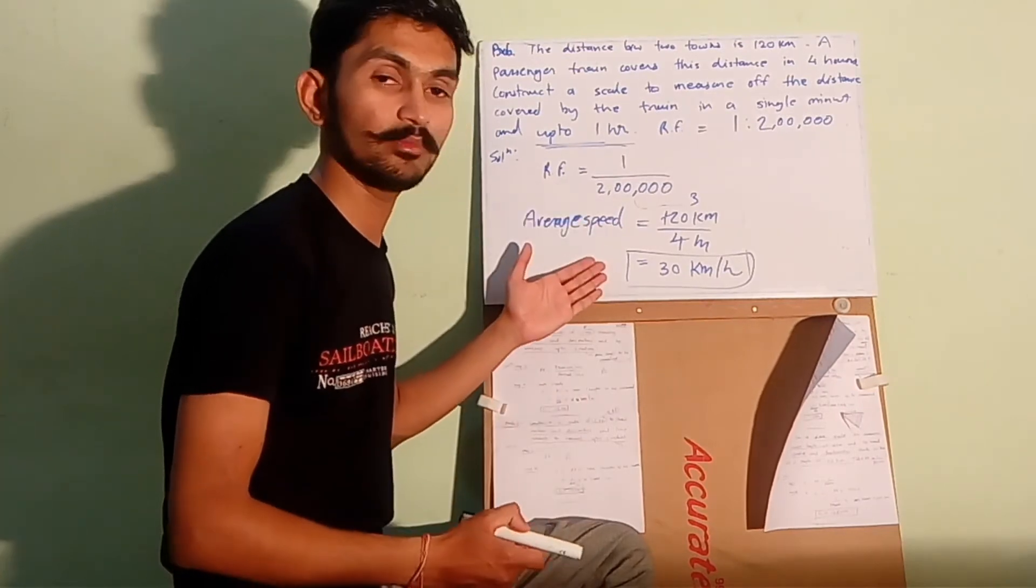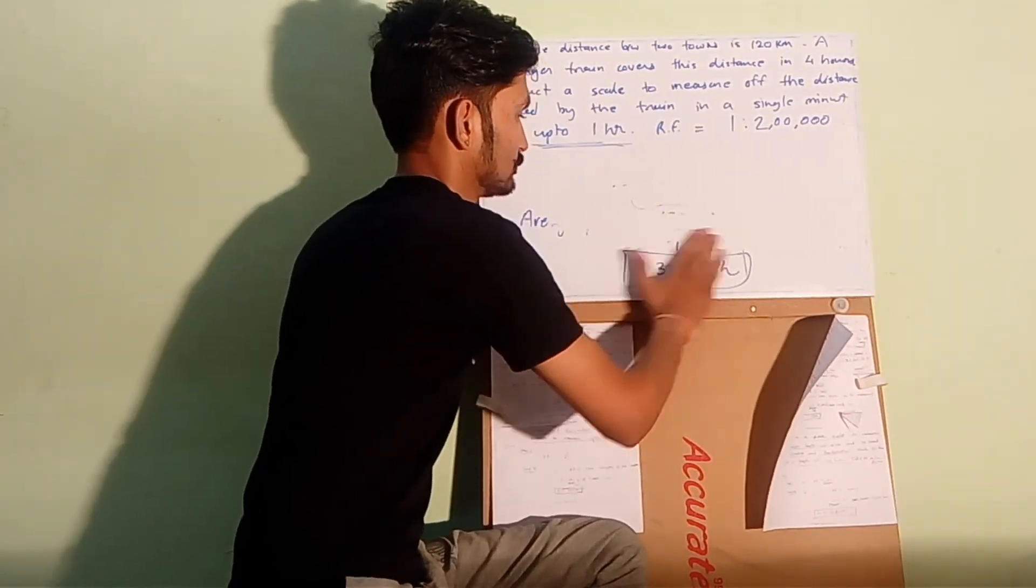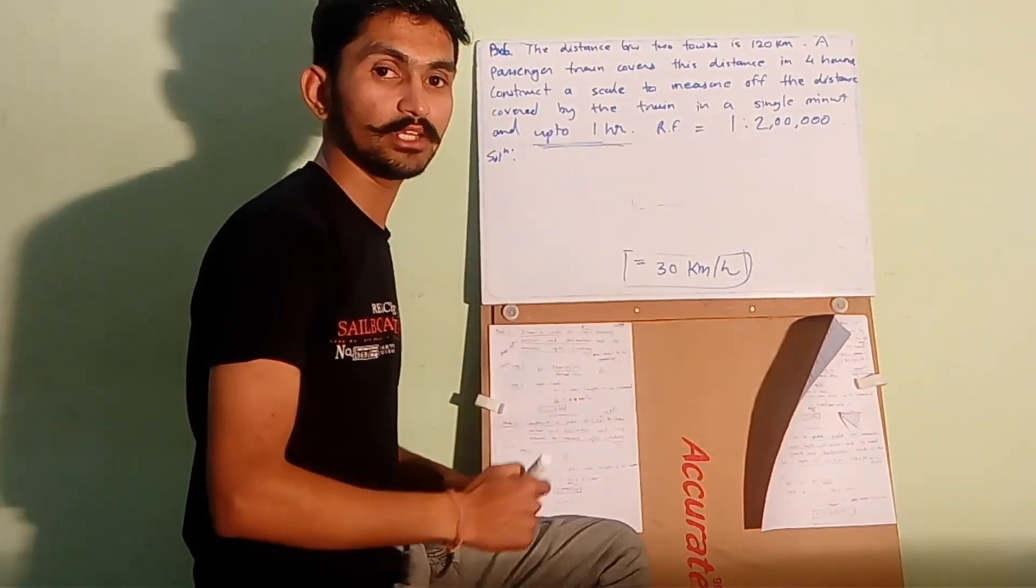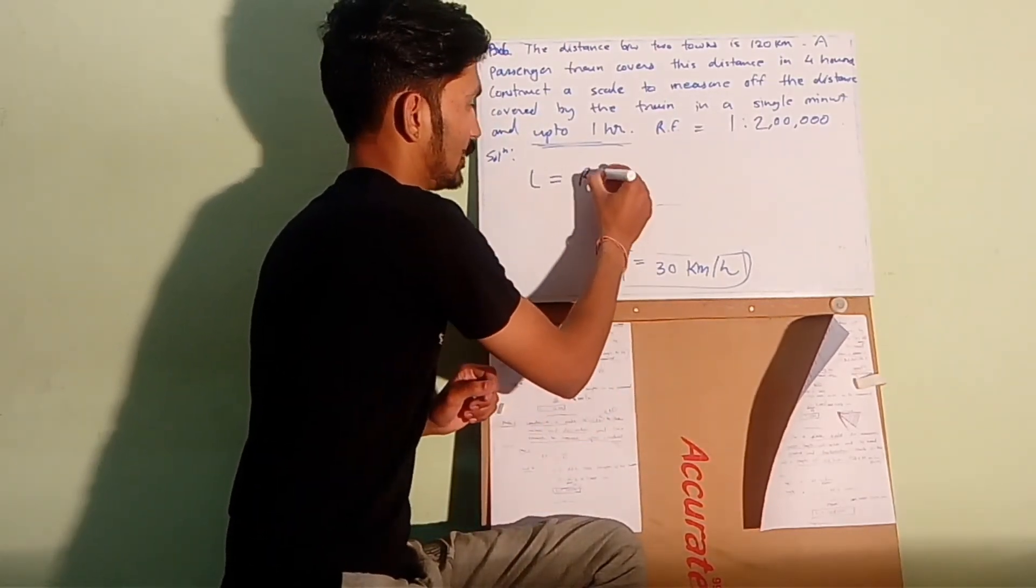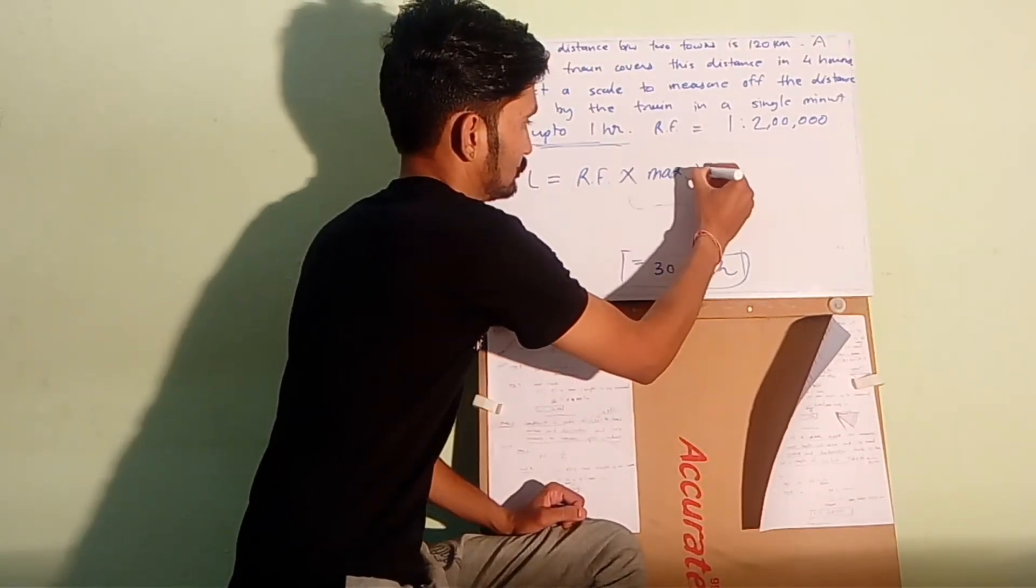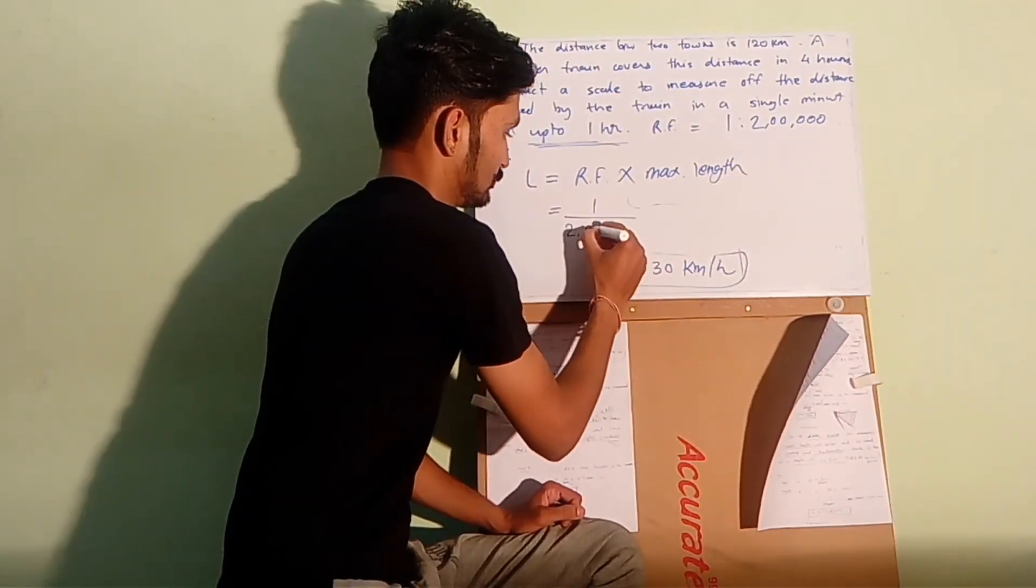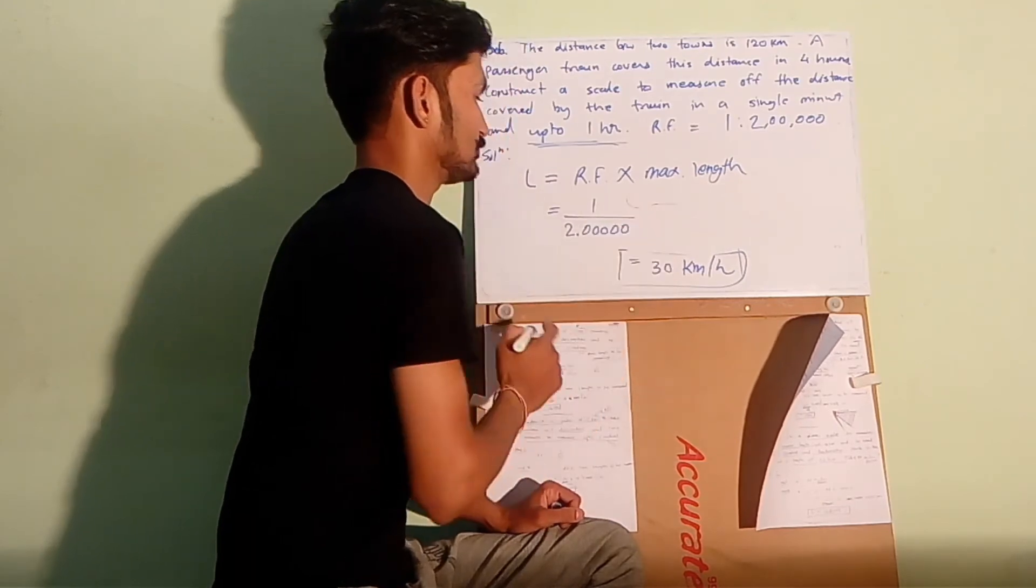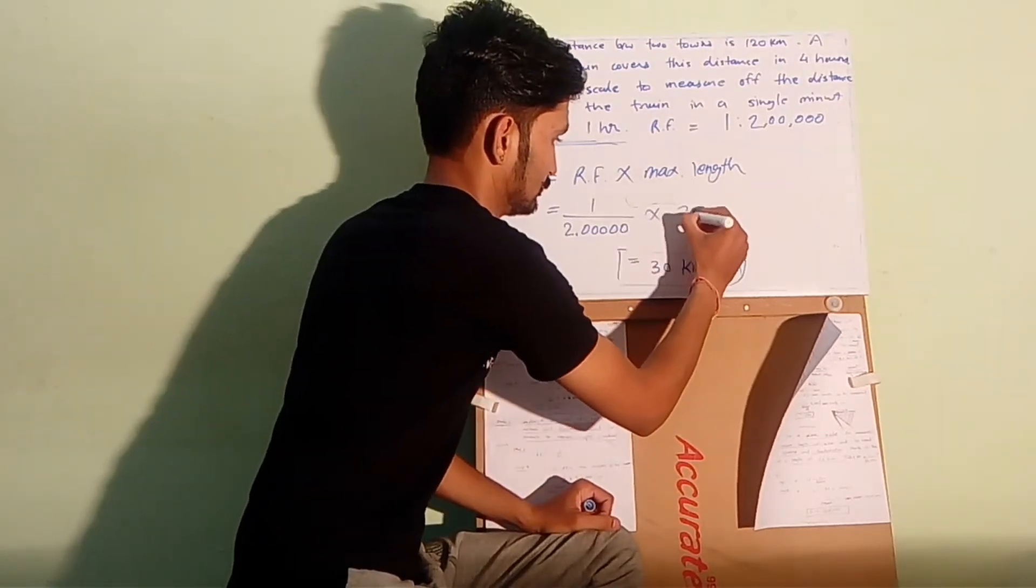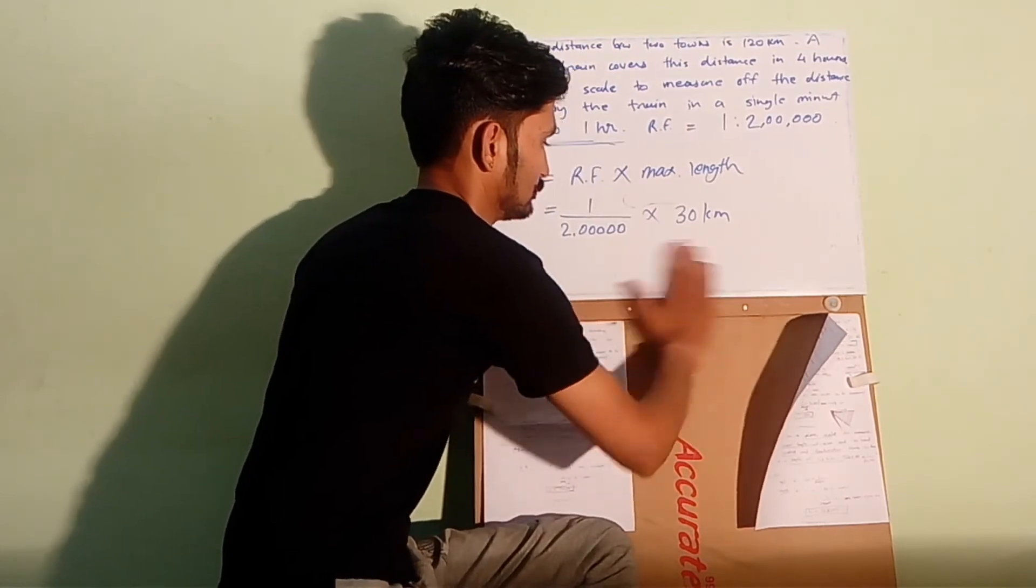So we have RF, we have maximum length to be measured. Now we can calculate the length of the scale. Length of the scale will be L which is RF multiplied by maximum length to be measured. RF is 1 by 2 lakh. Maximum length to be measured is 30 km.